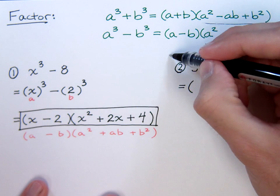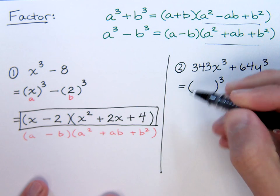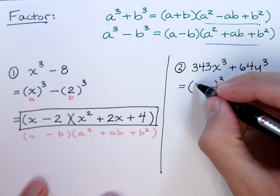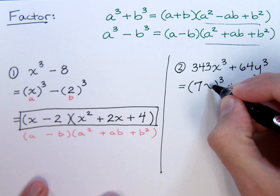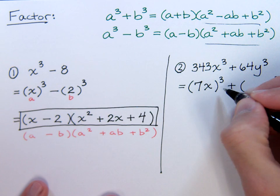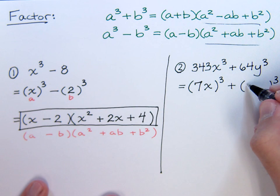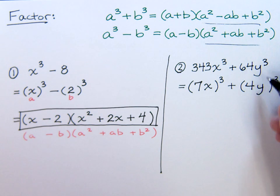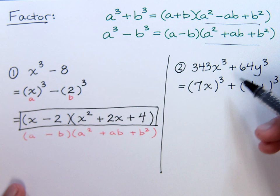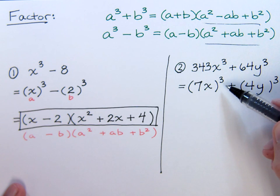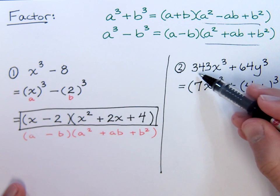But what are they? Well, 343 is actually the cube of 7, and of course, x to the third is x to the third. 64 is the cube of 4, and then there's the y. So 4y to the third is 64y cubed, and 7x to the third is 343x to the third.